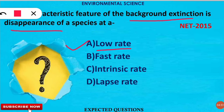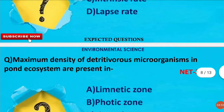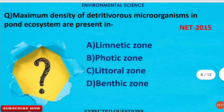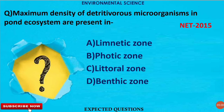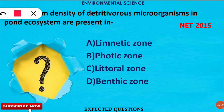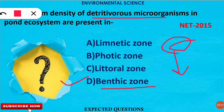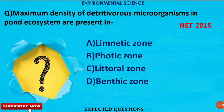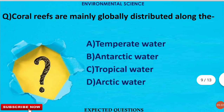The next question is: the maximum density of detritivorous microorganisms in a pond ecosystem are present in which zone? The correct option is option B — the benthic zone. Detritivorous microorganisms are present in greater amounts in the benthic zone because when animals at the top of the pond die and sink to the bottom, the detritivores in the benthic zone degrade them.